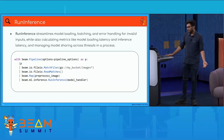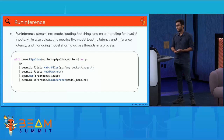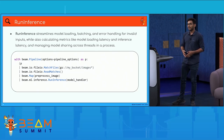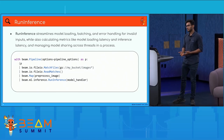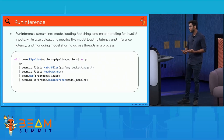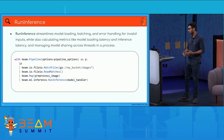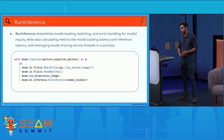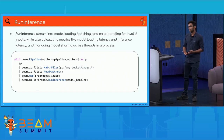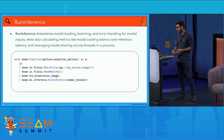Why run inference? Run inference helps with model loading and batching — you don't need to do batching on your end, run inference takes care of it. Error handling: if you have a bad input, we use a dead letter queue to filter out bad inputs from good ones, so the pipeline won't stop. We also calculate metrics like model loading latency and inference latency.